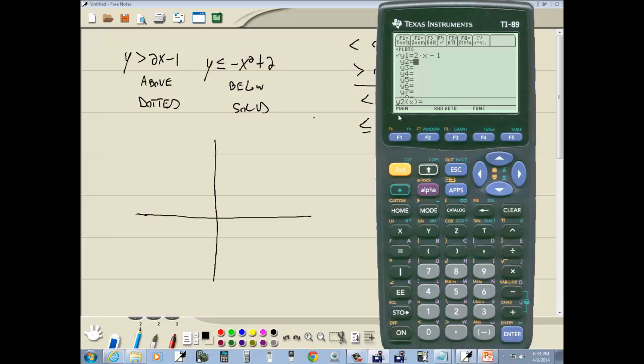Then on my next line, y2, I'll put my other one. Negative x squared plus 2. So negative x key carat 2. That's x squared. Then plus 2. Press enter.